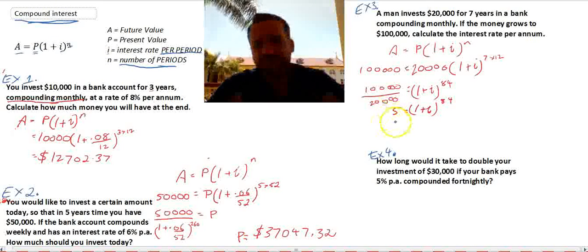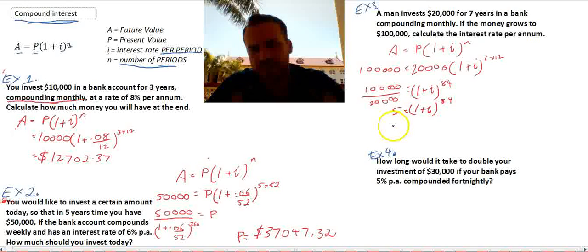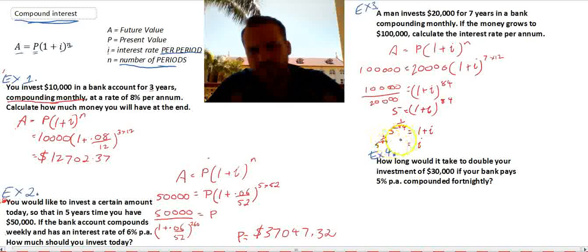Now, there's a few different ways you can solve this. You can use logs if you want to. I'm going to use fractional powers. Now, the opposite of to the power of 84 is 5 to the power of 1 on 84 equals 1 plus I. And therefore, I is going to be 5 to the 1 on 84 minus 1.